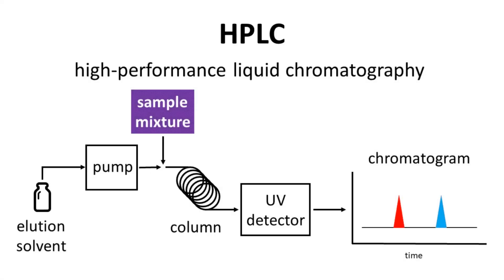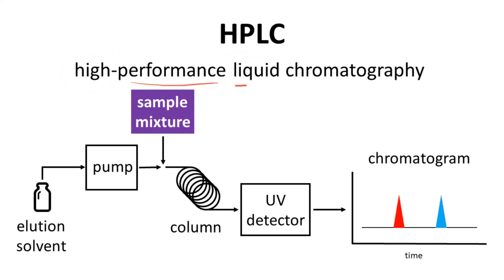The second use of UV spectroscopy is closely related to TLC. People also use UV spectroscopy to detect the elution of molecules in different types of chromatography — let's discuss HPLC, high performance liquid chromatography.